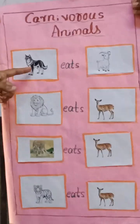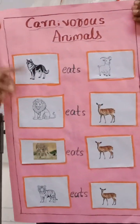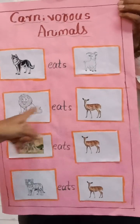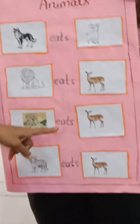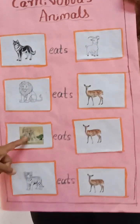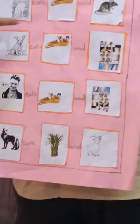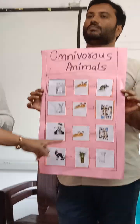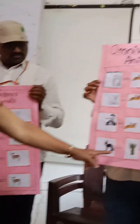Here also, for carnivorous animals, pictures are used instead of spellings. Tiger eats deer, lion eats deer, and leopard eats deer. For omnivorous animals: cat eats bread and meat, dog eats bread and meat, human beings eat bread and meat, and fox eats sugar cane and goat.